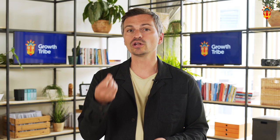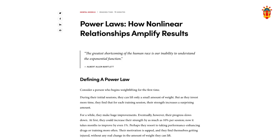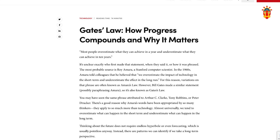One way to tackle this change is to first admit it — to accept that things are changing exponentially. At the individual capability level, we need to stop approaching the problem linearly and unlearn our old models and ways of working, in order to unlock exponential growth in human knowledge and capital. If you want more resources on exponential change, check out Farnham Street's article on power laws and how non-linear relationships amplify results, or Gates' law on how progress compounds and why it matters. Links are in the description below.